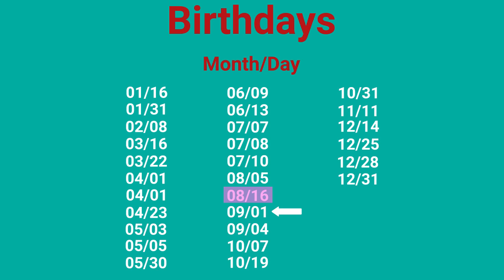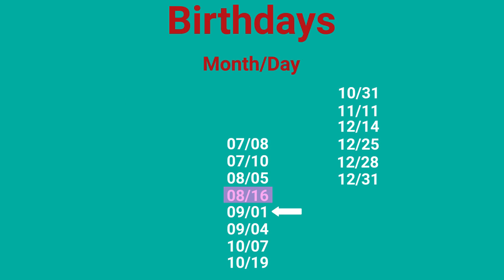A more efficient way is to use a binary search. You can look at the middle of the list and, based on the value there, determine whether your birthday is in the first half or the second half. Now you know that you can safely ignore the other half. You can then repeat this step by looking at the middle of this new list and continue until you reach your birthday.